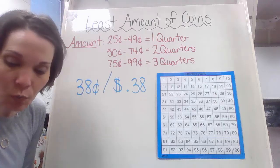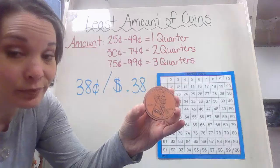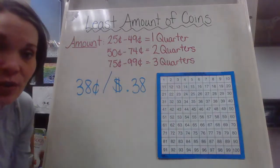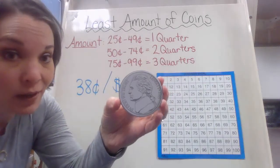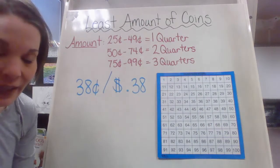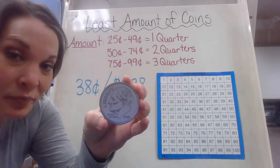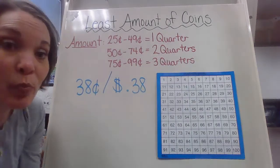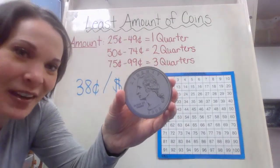Let's start with the smallest value, which is obviously our penny, worth one cent. Let's kick it up a notch — our next smallest value is our nickel, worth five cents. Then getting larger, here's our next coin: dime, 10 cents. And then the biggest coin we're going to be using in this lesson today is our quarter, worth 25 cents.